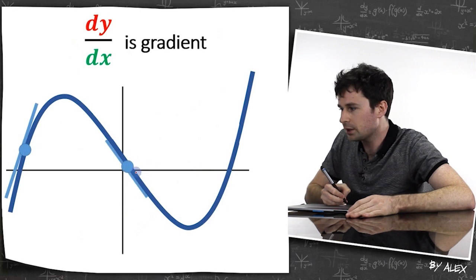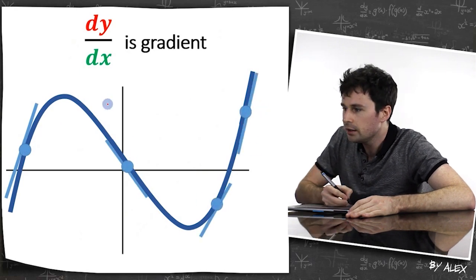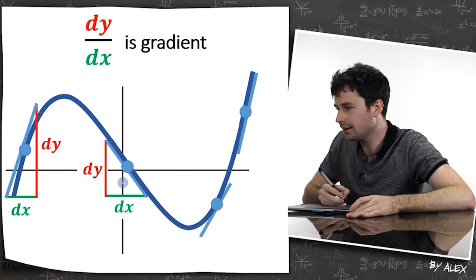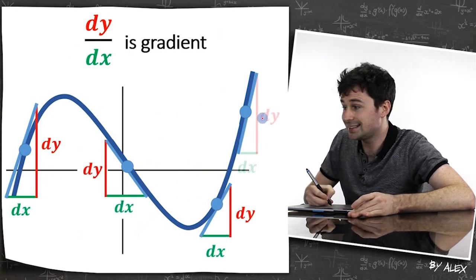So if we look at different gradients on here, we can see there's all different gradients here. We can see that dy is the rise and dx is the run. Same here, same here, and same here.